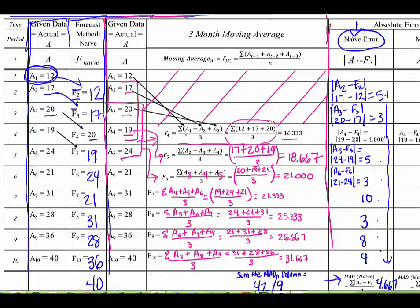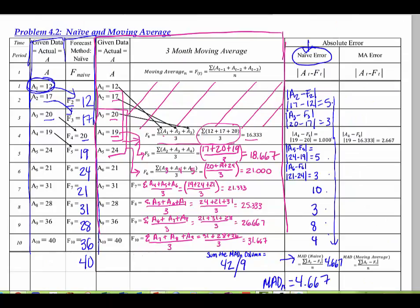Now let's calculate the MAD for the moving average model. I'm going to do that in pink so that you can see which set it's for. The first thing to keep in mind is that we cannot calculate a MAD for the first three periods — just like we were not able to calculate a forecast. We can't tell how accurate our forecast is either, because we don't have anything to compare.